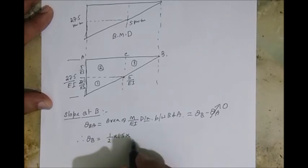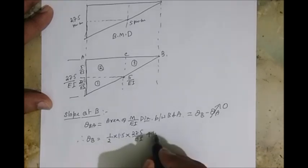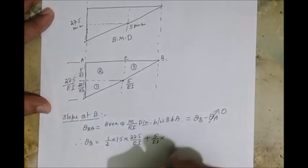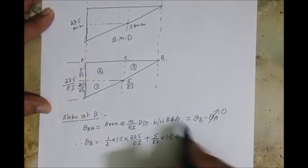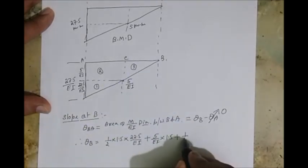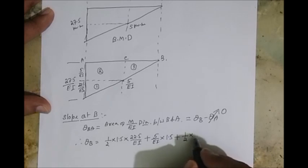Half into base into height, that's it. Area plus second region. So it's a rectangle, so it is 5 by EI into length 1.5. Plus next triangle region, third region. So once again is the area: half into base is 1 into height is 5 by EI.